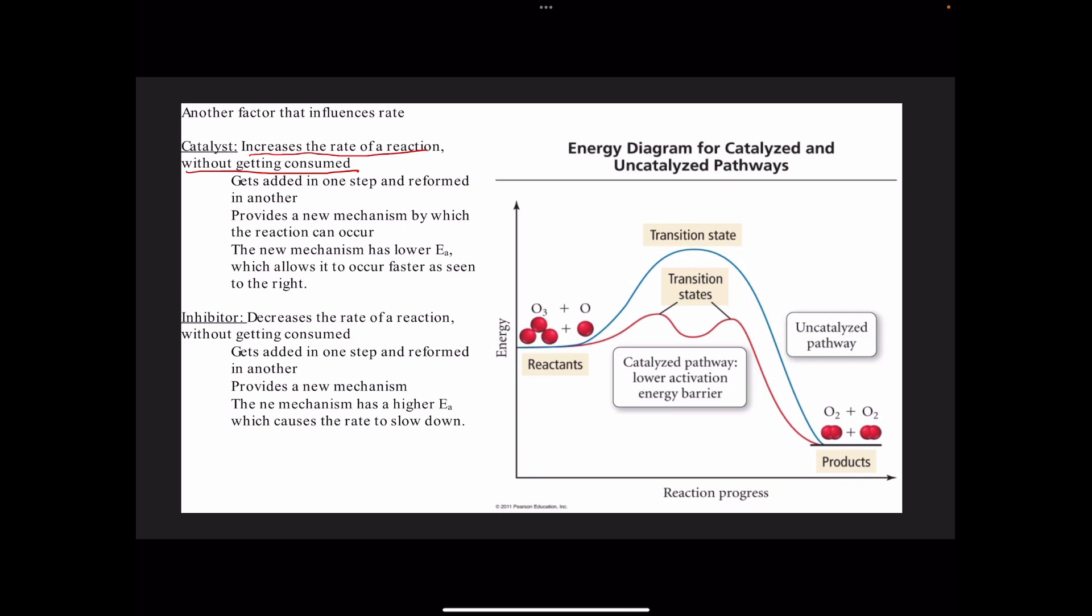What the catalyst does is it actually provides a new mechanism by which our reaction can occur. The new mechanism has lower activation energy, which allows it to occur faster as seen to the right.